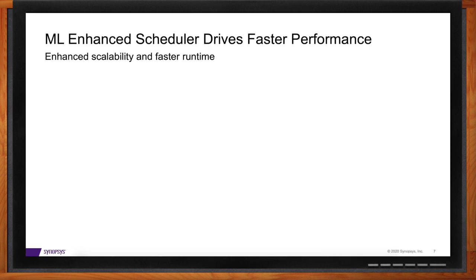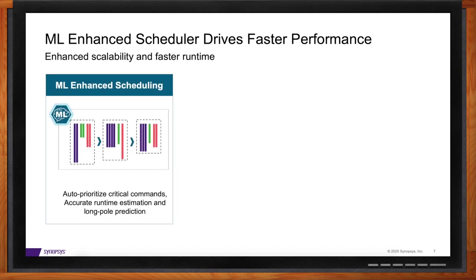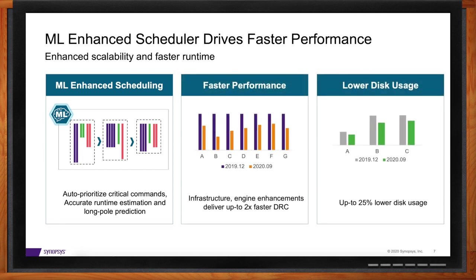Machine learning is used for two different goals in ICV: improving tool performance and enhancing user productivity. Physical verification jobs involve thousands of commands, and ICV has a built-in ML-driven scheduler that manages those jobs, dependencies, and ensures the job completes on time. It accurately predicts command requirements before the job starts, does long-pole prediction so it can schedule critical commands early, and prioritizes them to eliminate delays. This ML-driven scheduling improves command scheduling and overall tool performance.